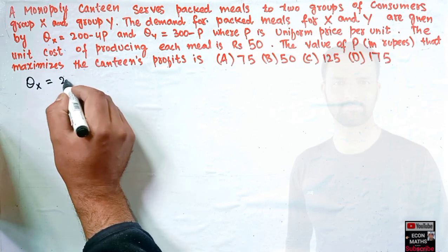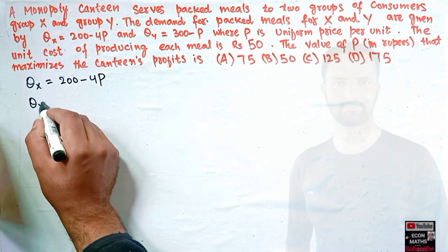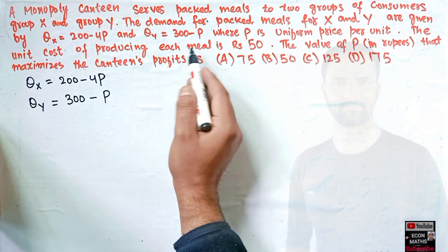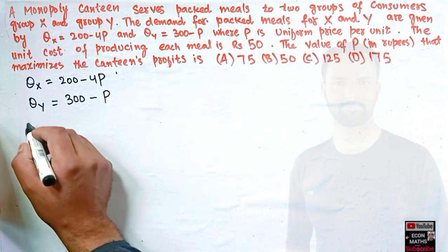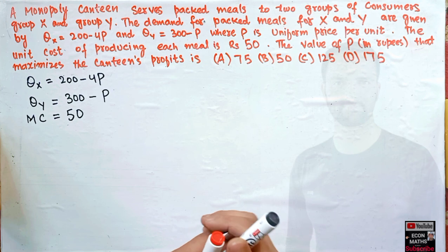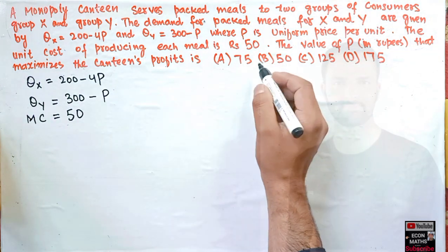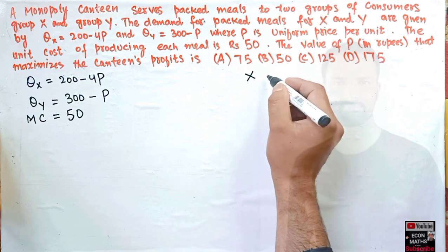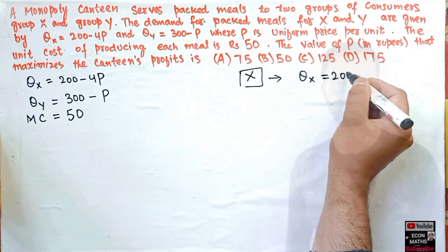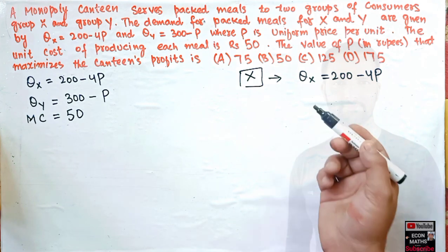We are given the demand function QX = 200 − 4P for Group X, and QY = 300 − P for Group Y. The marginal cost, which is the unit cost, is given as 50 for producing each meal. Before using the profit-maximizing condition, we need to look at the demand functions individually. We have two groups: Group X and Group Y.